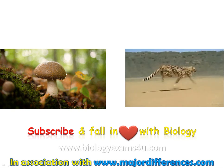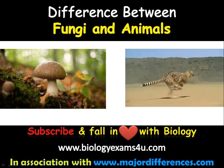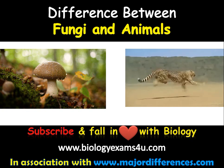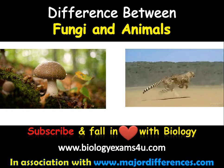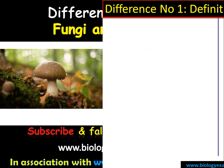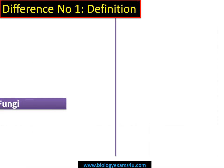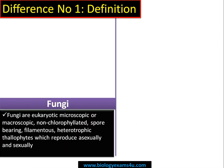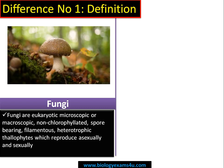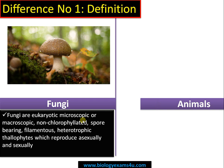Hi friends, once again back to biology exams4u.com. Today we are going to discuss a very interesting topic: the difference between fungi and animals in detail. Starting with the definition — fungi are eukaryotic, microscopic or macroscopic, non-chlorophyllated, spore-bearing, filamentous, heterotrophic thallophytes which reproduce asexually and sexually. We'll be discussing each term in the coming slides.